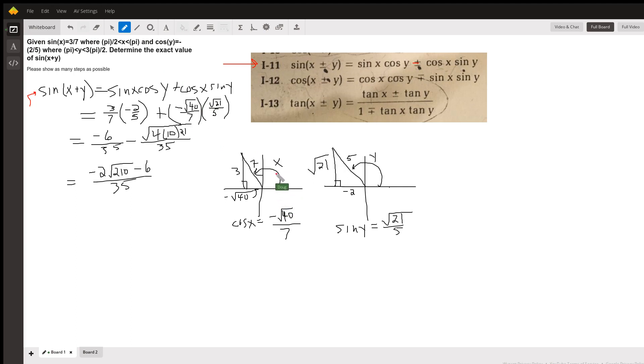So we're told that x is in the second quadrant and has a sine of three sevenths. So if we use the Pythagorean theorem we can find the coordinate of this leg, or the x coordinate of this point, which turns out to be by the Pythagorean theorem square root of 49 minus 9, or the square root of 40. And so the cosine of x is the negative square root of 40 over 7.